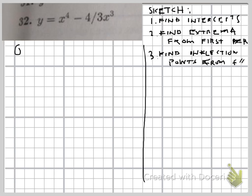So we're going to set the function equal to zero to see where the x-intercepts occur. We can factor out an x cubed, which leaves us at x minus 4 thirds.